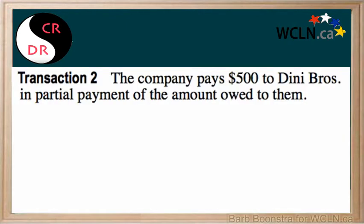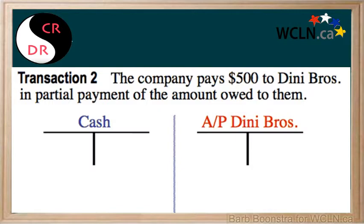Quite often when we are analyzing transactions, we like to see how it affects cash. In this transaction, we are paying Deeney Brothers $500. Cash is going to go down because we are paying out cash, so therefore the cash account will be credited $500.